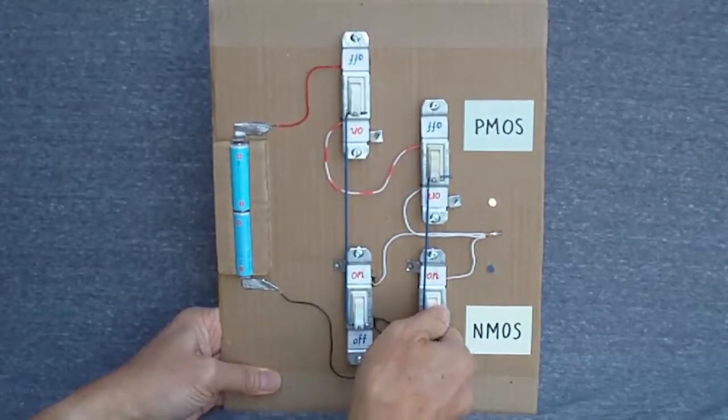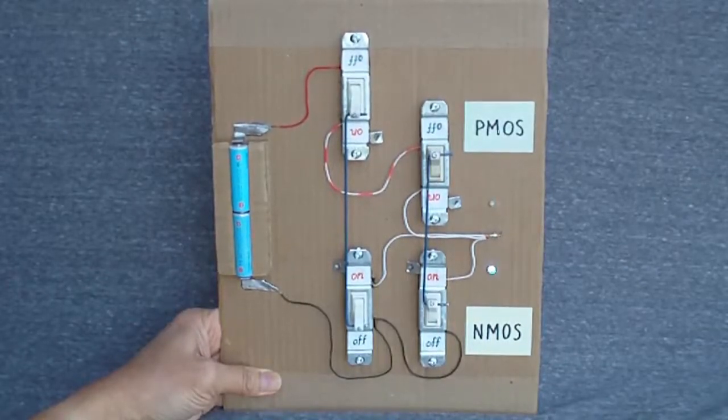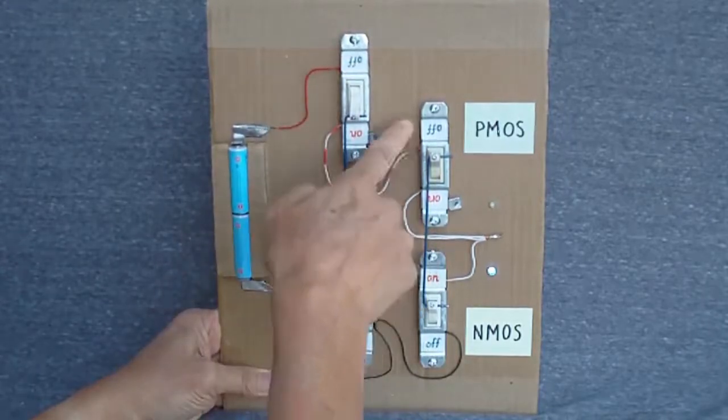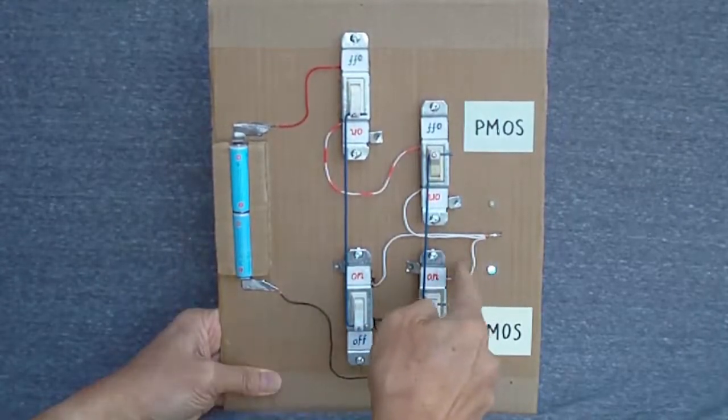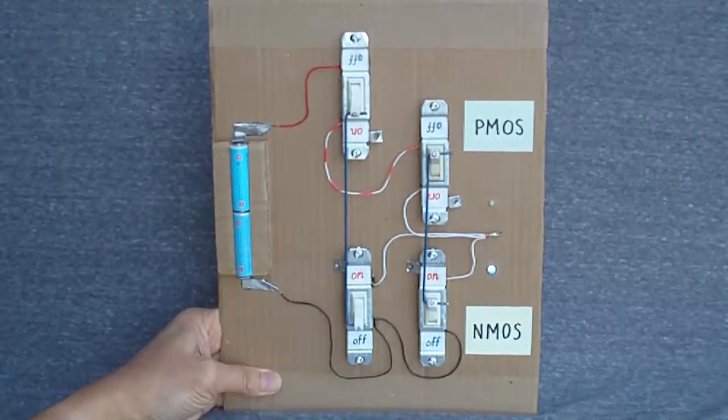If the first input is low while the second is high, the situation is the same as the previous one. The output is cut off from the power supply by the other PMOS transistor, and connected to ground through the other NMOS transistor. The voltage is still low.